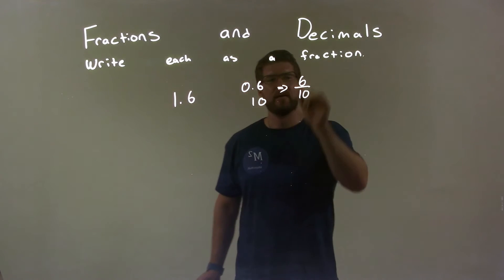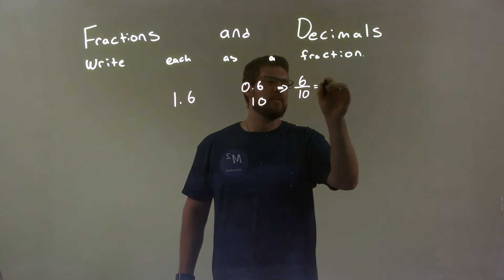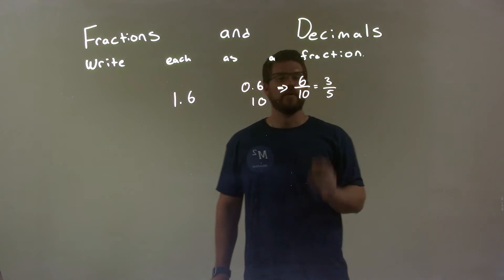All right, so that's my little trick there. 6 divided by 10. Well, that can be simplified. Both are divisible by 2, right? So 6 divided by 2 is 3, and 10 divided by 2 is 5. So we have 3 fifths.